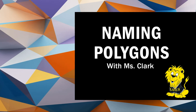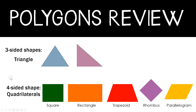Hi Lafayette third graders, it's Ms. Clark and today we're going to continue talking about polygons and naming and identifying different polygons. Yesterday you reviewed three and four-sided shapes. We learned that three-sided shapes are called triangles and four-sided shapes are called quadrilaterals. Now there are different kinds of quadrilaterals like squares, rectangles, trapezoids, a rhombus, and parallelograms. They all have four sides so they're all considered quadrilaterals.